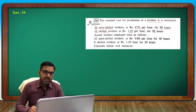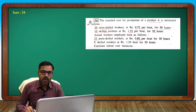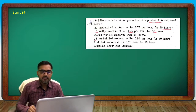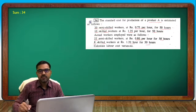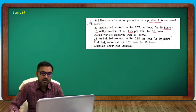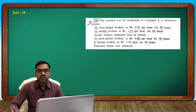Actual detail: 22 semi-skilled workers at 0.80 per hour rate for 50 hours. 8 skilled workers at 1.20 per hour for 50 hours. Calculate labor cost variances.